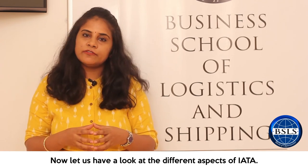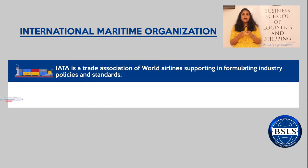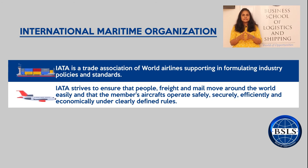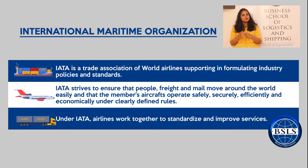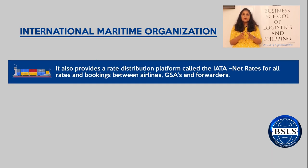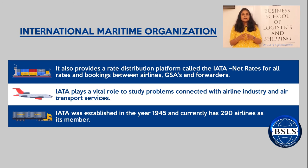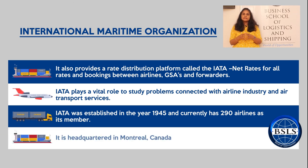IATA also provides net rates, a platform providing all rates and bookings between airlines, GSAs and forwarders. It is mandatory for an agent to be registered with IATA in order to process an air shipment. IATA is a trade association of world airlines supporting in formulating industry policies and standards, striving to ensure that people, freight and mail move around the world easily and that member aircraft operate safely, securely, efficiently and economically under clearly defined rules. Airlines work together under IATA to standardise and improve services. IATA also publishes the air cargo tariff and rules, the ultimate guide for operational and compliance information for air cargo. IATA was established in 1945 and currently has around 290 airlines as its members, headquartered in Montreal, Canada.